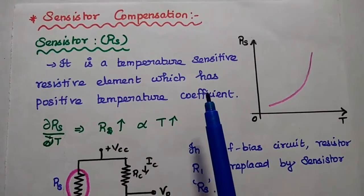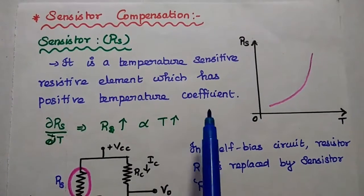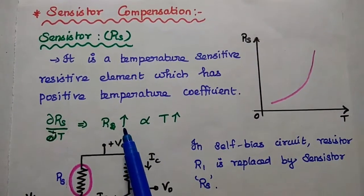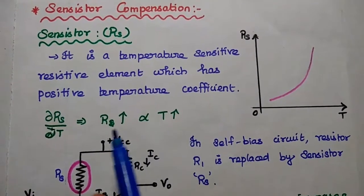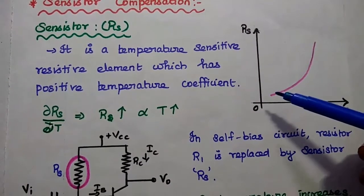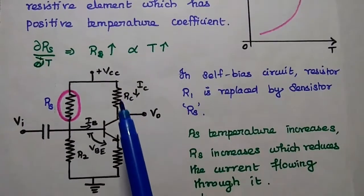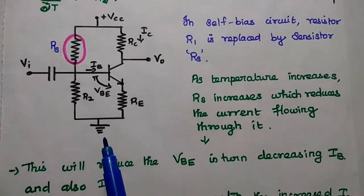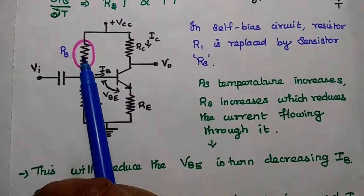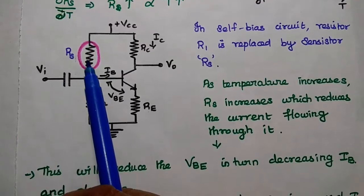Next is sensistor compensation. A sensistor is a temperature sensitive resistive element which has a positive temperature coefficient. Positive temperature coefficient means the resistance value increases exponentially with increasing temperature — both are directly proportional. This is the temperature versus RS diagram, where resistance increases with increasing temperature. In the self-biased circuit, the R1 resistance is replaced with the sensistor.